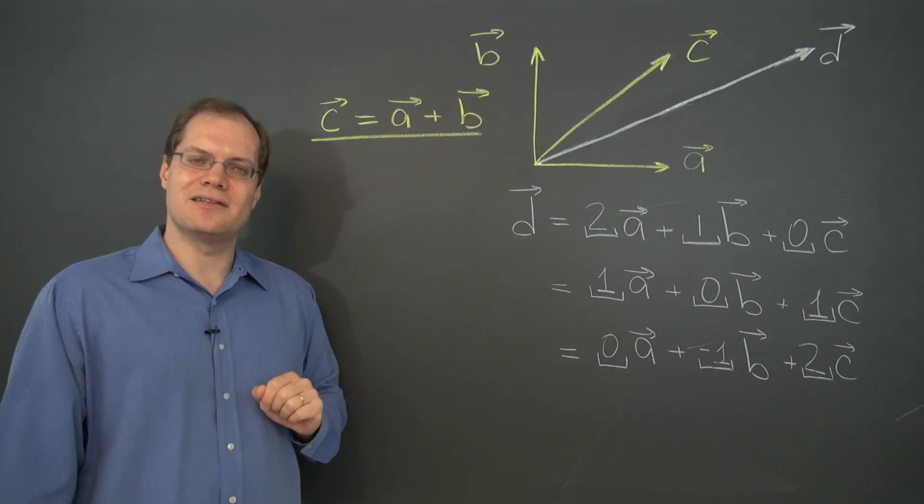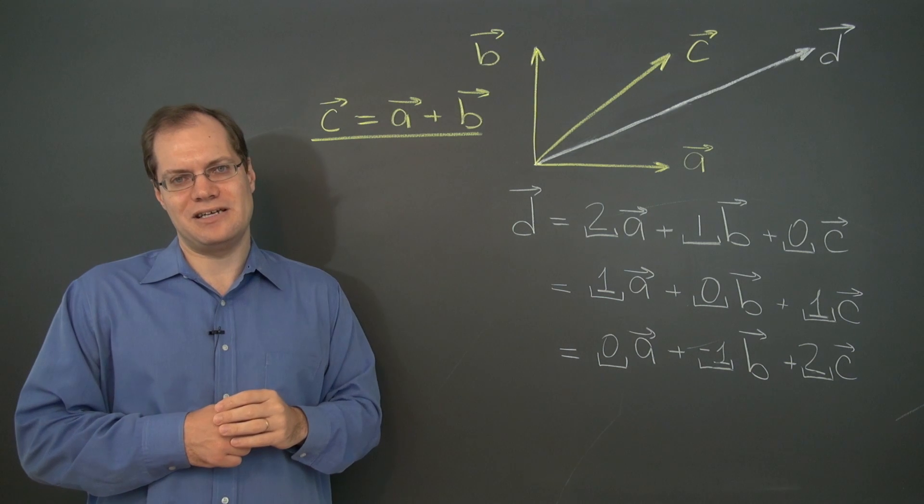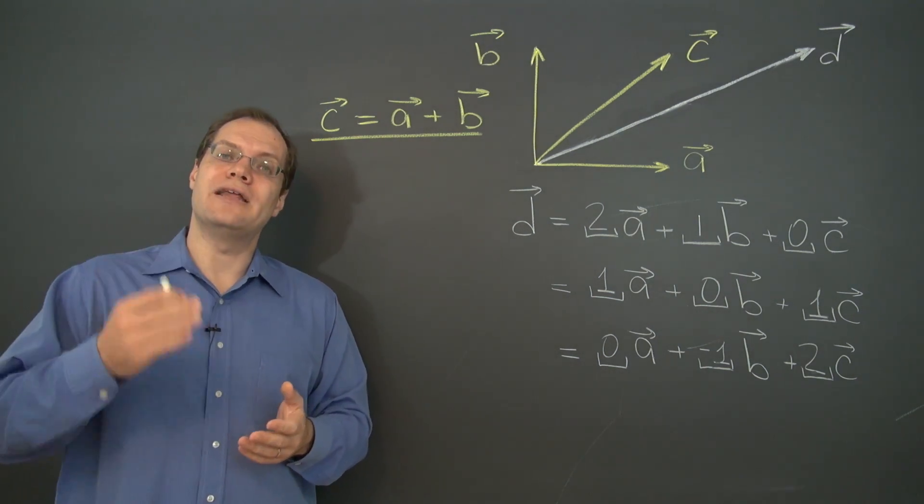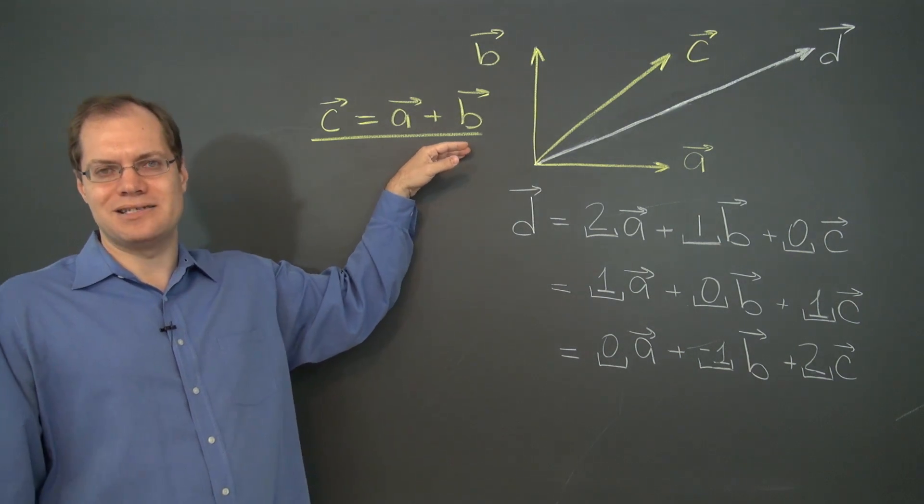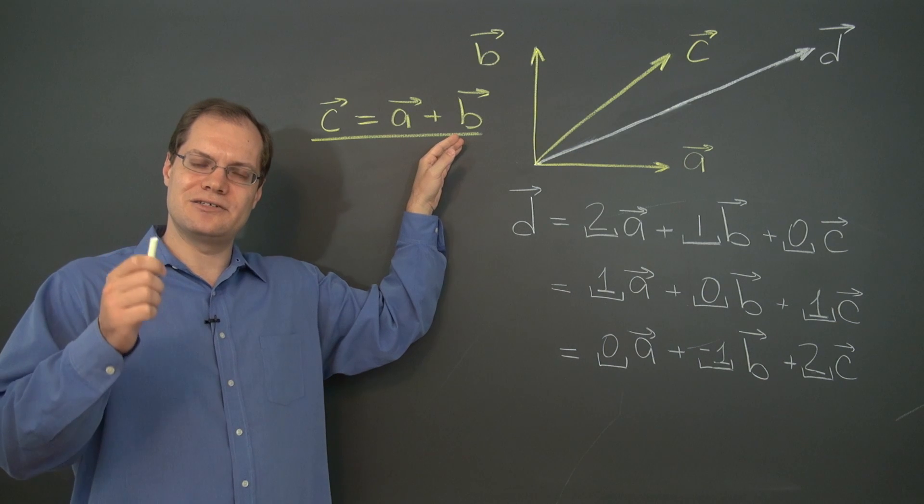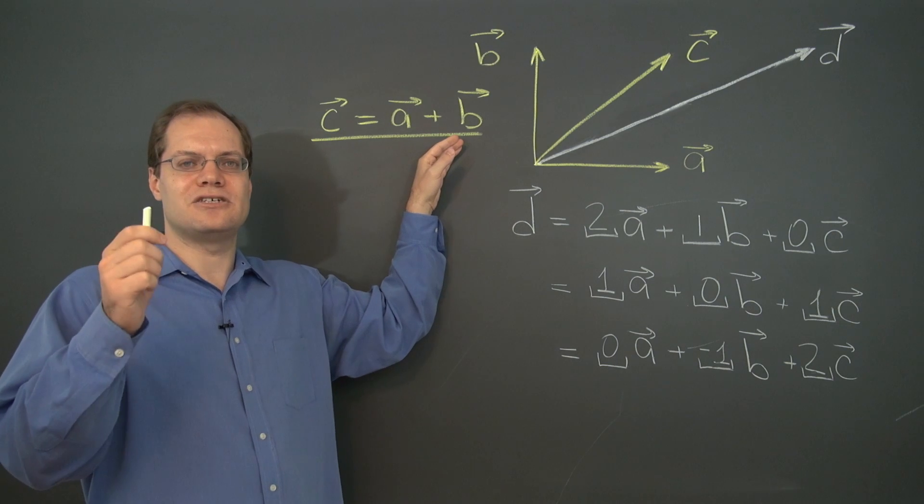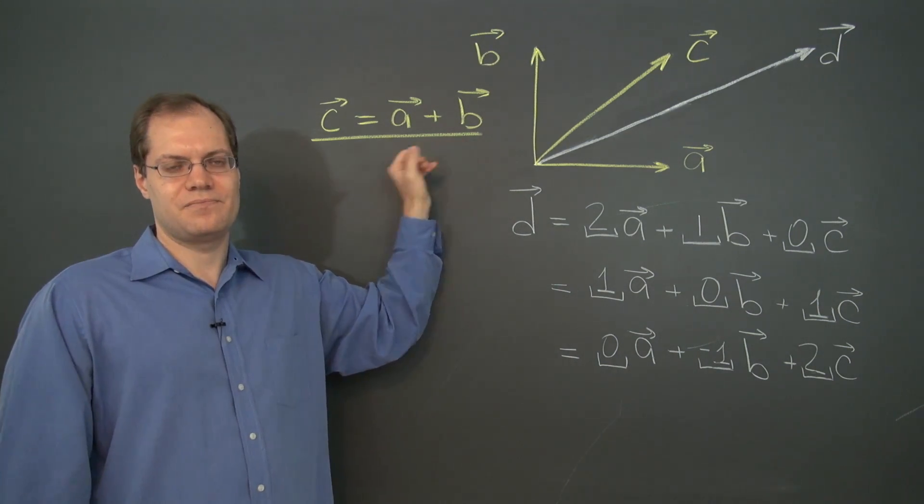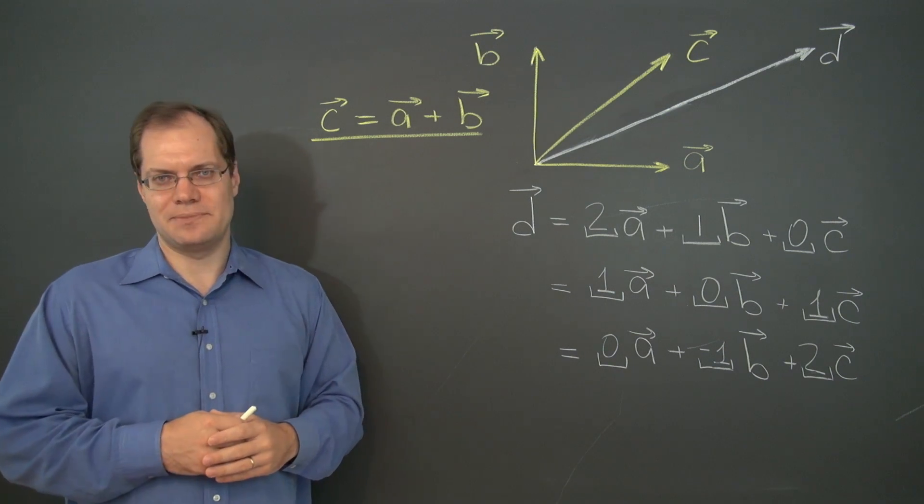Now, of course, a can be expressed as a linear combination of b and c, and b can be expressed as a linear combination of a and c. So any one of those relationships would have qualified this set as linearly dependent, but you only need one. A set of vectors is linearly dependent if one of the vectors can be expressed as a linear combination of the rest.